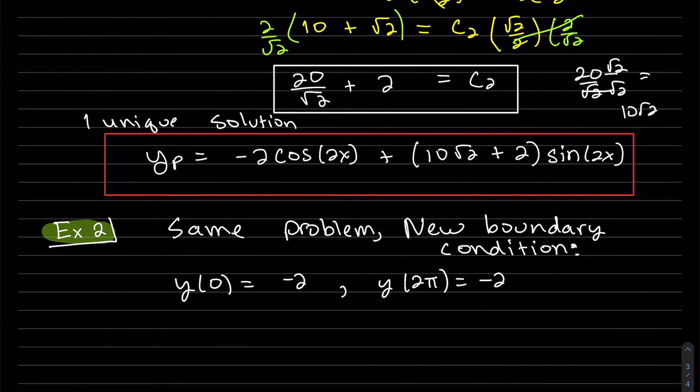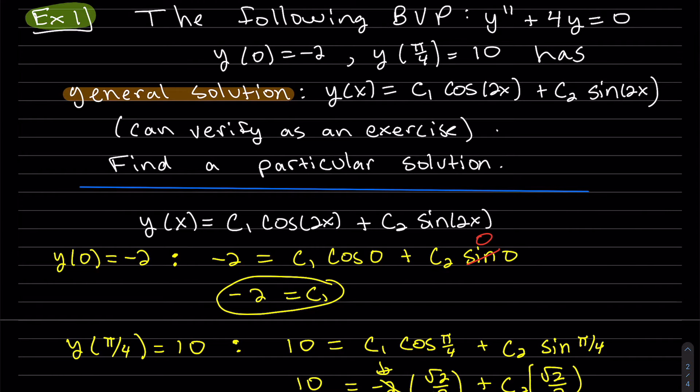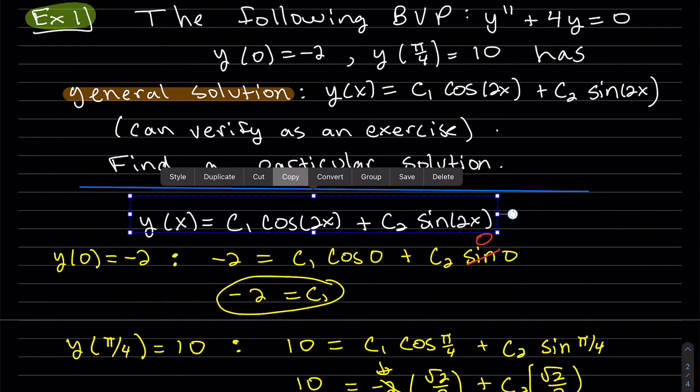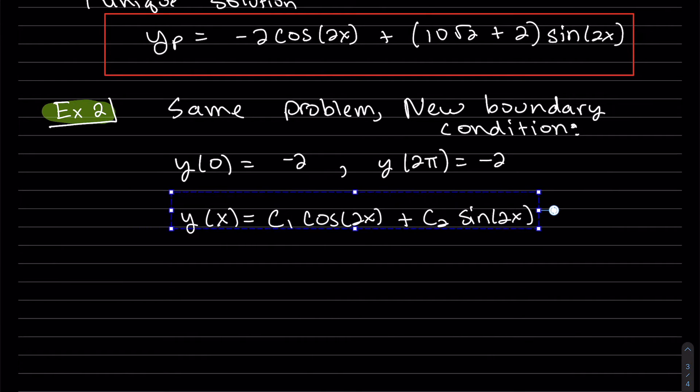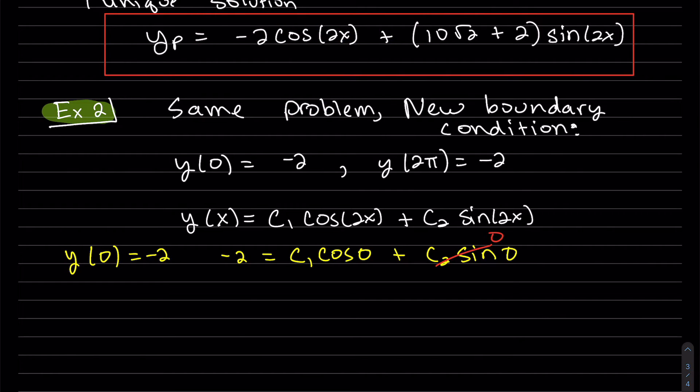So same problem, new boundary condition. And here's our new boundary conditions. Let's copy our general solution. And plug in our two boundary conditions. So this is the same one as boundary condition as last. So we get our second boundary condition.